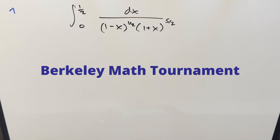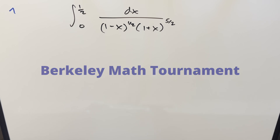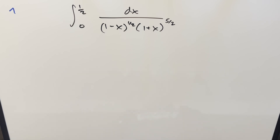We've written a nice integral from the Berkeley Math Tournament 2024, calculus number 7. We've got the integral from 0 to 1/2 of 1 over square root of (1 minus x) times (1 plus x) to the 5/2, dx.